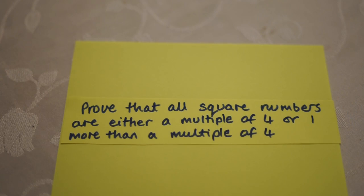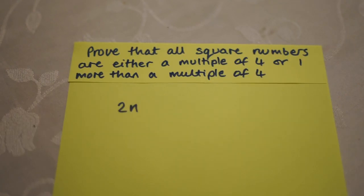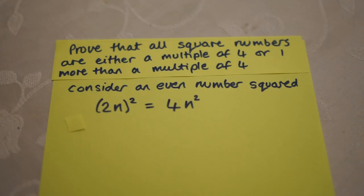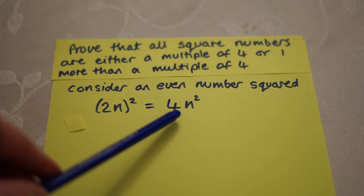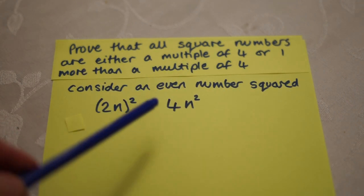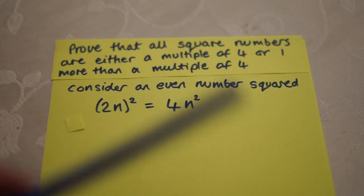All even numbers have a factor of 2, so we can write any even number in the form 2n, where n is a positive integer. If we square an even number, we get 4n squared. This is clearly a multiple of 4.